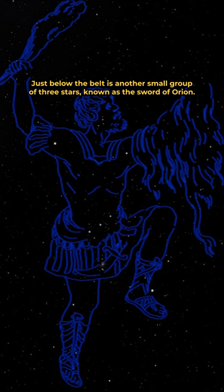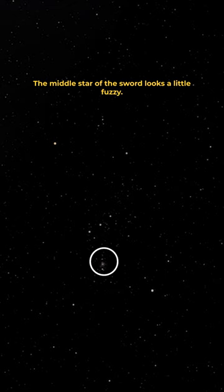Just below the belt is another small group of three stars, known as the Sword of Orion. The middle star of the sword looks a little fuzzy, and in fact is the Great Orion Nebula, a beautiful star-forming region.